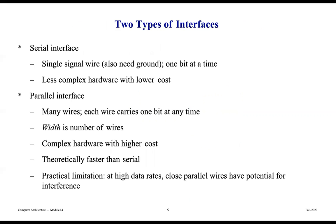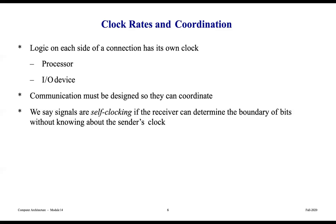There are two types of interfaces: serial and parallel. A serial interface uses a single signal wire plus ground, and one bit is transmitted at a time — it has less complex hardware and lower cost. A parallel interface has many wires, each carrying one bit at a time, and its width equals the number of wires; it has more complex hardware and higher cost, and is theoretically faster than serial. However, at high data rates, closely spaced parallel wires have potential for interference. USB is an example of a serial interface, and SATA is another example of I/O interfaces.